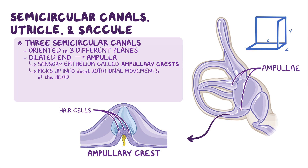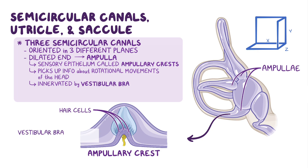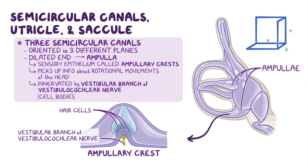The hair cells of the ampullary crest are innervated by the vestibular branch of the vestibulocochlear nerve, and the cell bodies of these neurons are found in the vestibular ganglion.